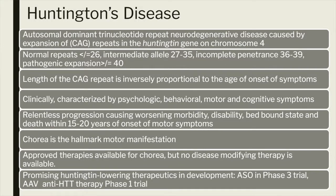All polyglutamine disorders are autosomal dominant in nature. There is a certain number of CAG repeats that is considered normal. In case of Huntington disease, the normal repeats are less than 26. So in an unaffected individual, both alleles of the Huntington gene on chromosome 4 will carry less than 26 CAG repeats in exon 1 of the Huntington gene. In a pre-mutation state, the number of expanded CAG repeats is about 27 to 35. These individuals are not expected to develop any pathology. However, this repeat becomes unstable at this point and the possibility of transmitting an expanded repeat to the next generation becomes higher. In case of Huntington disease, if the transmitting parent is the father, then the possibility of transmission is higher.